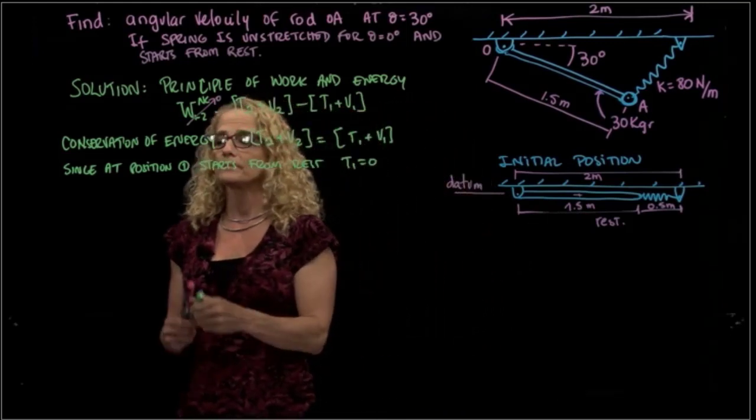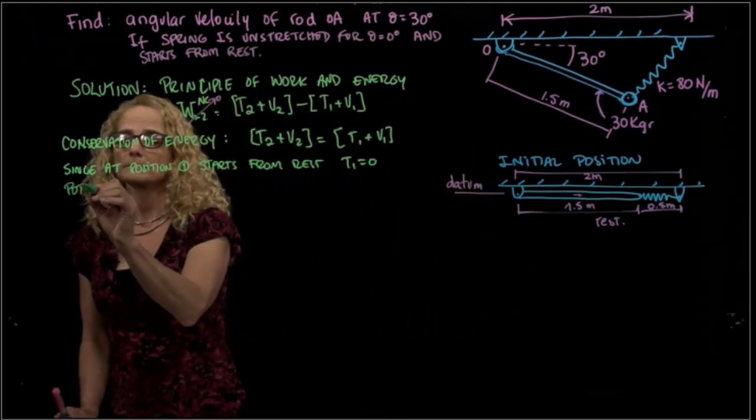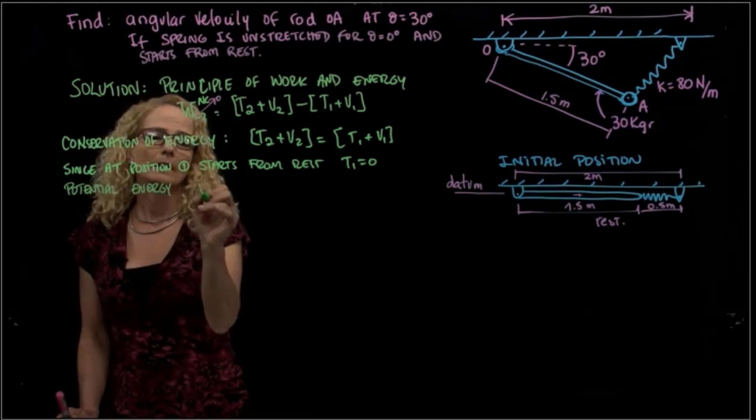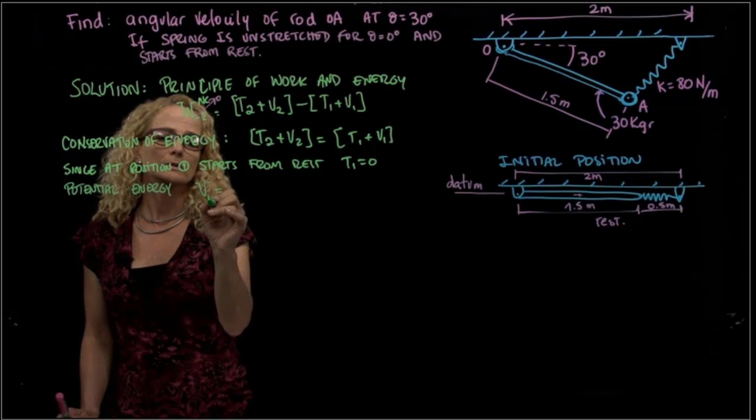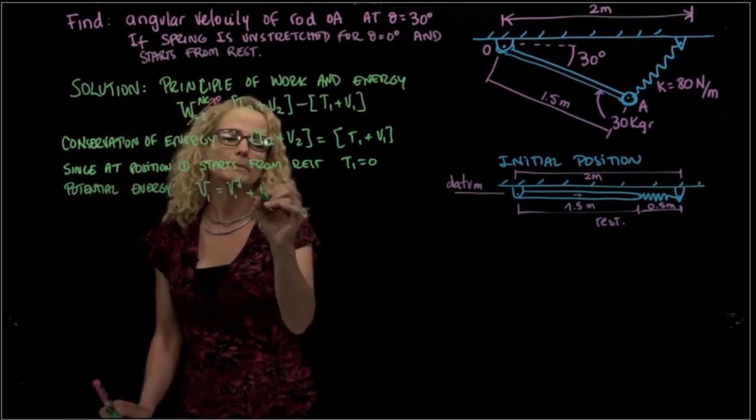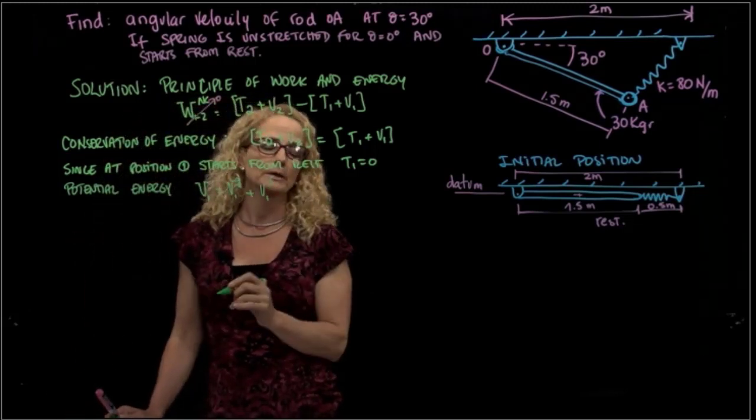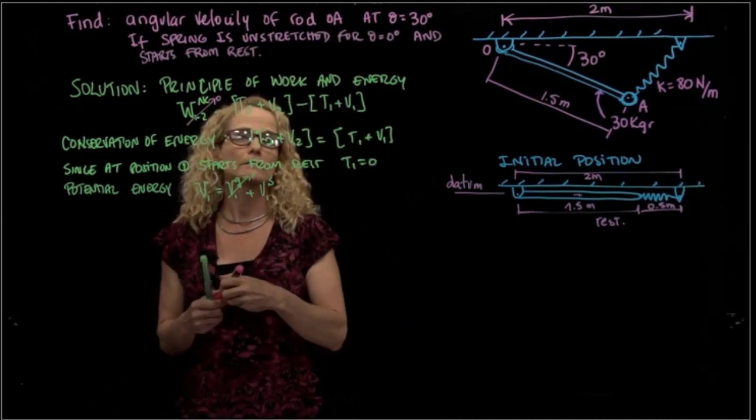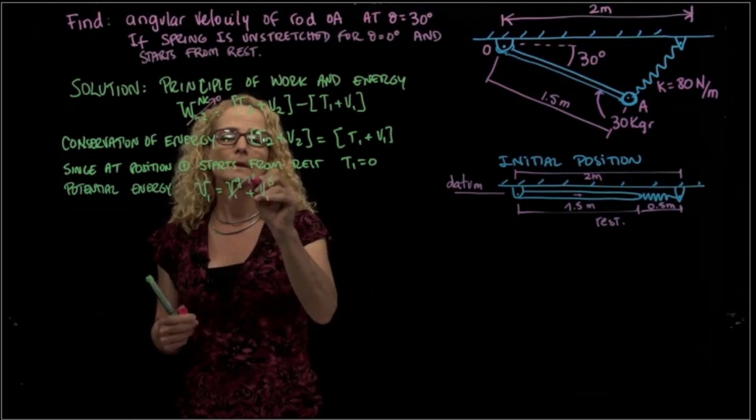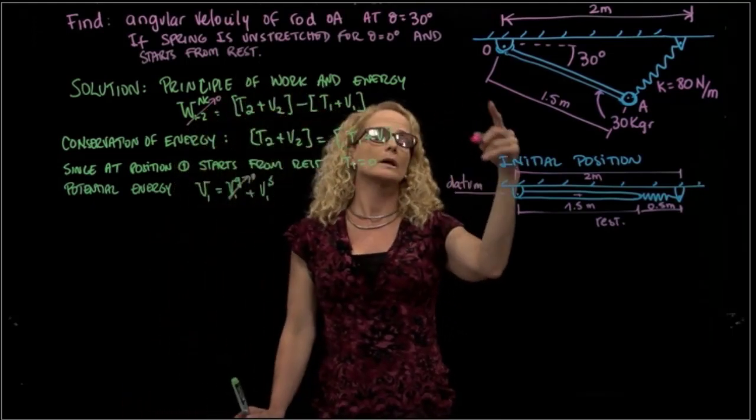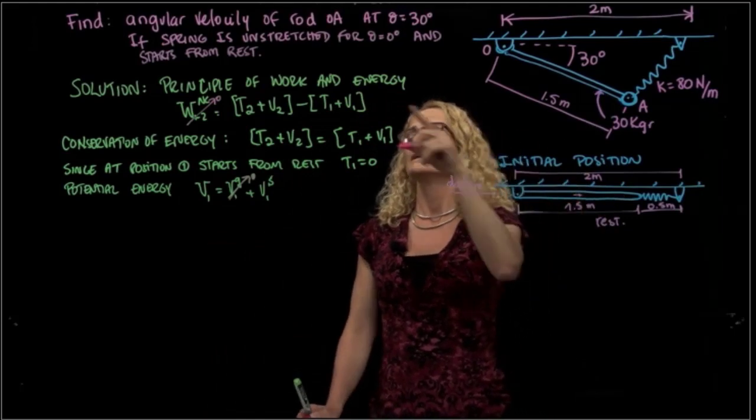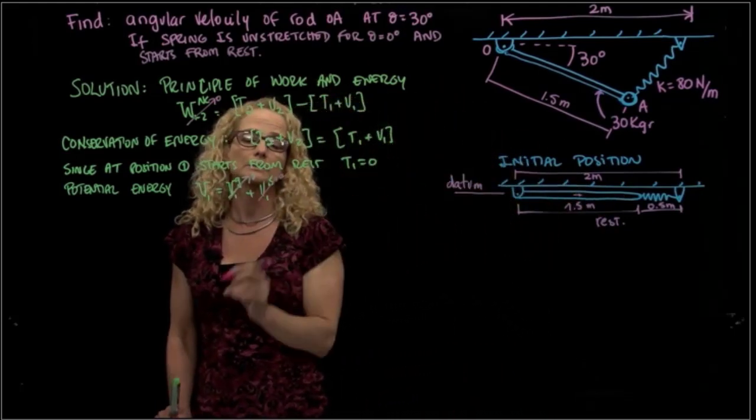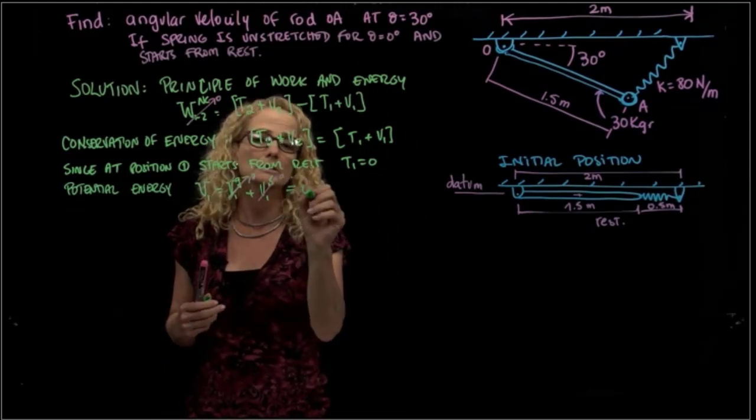So our potential energy, as you know, equals the potential energy done by gravity plus the potential energy done by the spring. Because of our datum, we can say that this is 0. And actually, it says also that for that position where theta equals 0, the spring is unstretched. So since it's unstretched, this is also equals to 0. So the potential energy is 0.